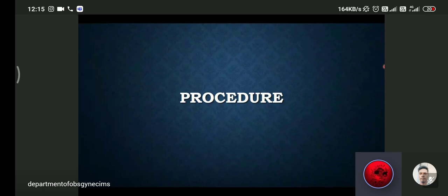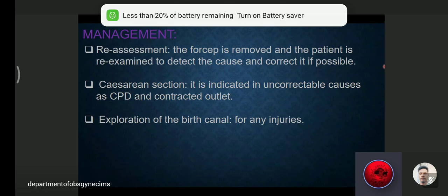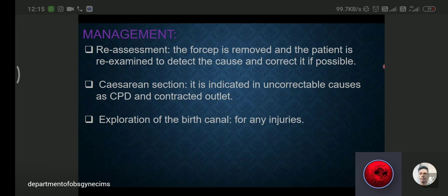Re-assessment: the forceps is removed and the patient is re-examined to detect the cause, and correct if possible. That means, as I told you, first introduce the forceps, make it locked. Then that means the head and the pelvis and the forceps are in the right position. Then you can give episiotomy. Otherwise, you give episiotomy and then apply forceps, and then forceps will not be locked, and you will not be able to use these forceps and you have to go for C-section. The best is to first reintroduce, examine, then give episiotomy, and then again reintroduce and remove the head with the help of forceps.